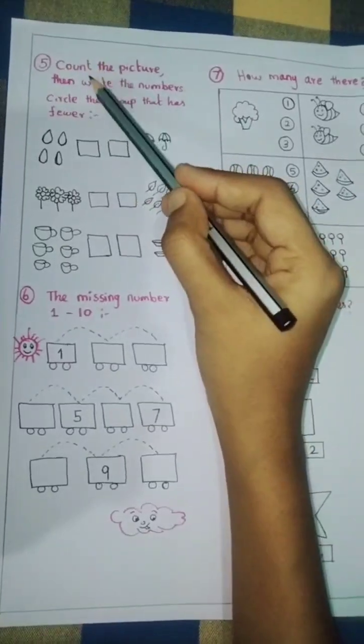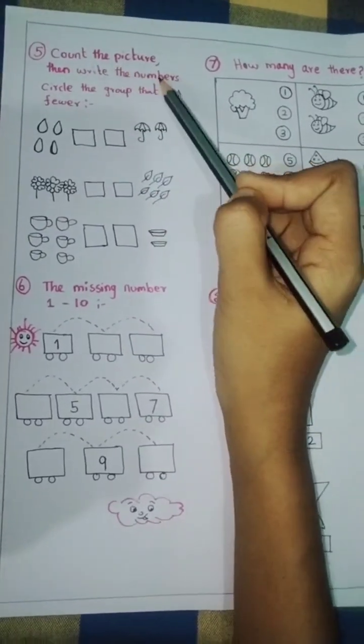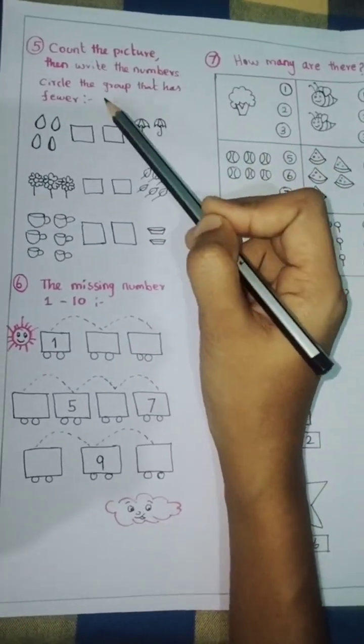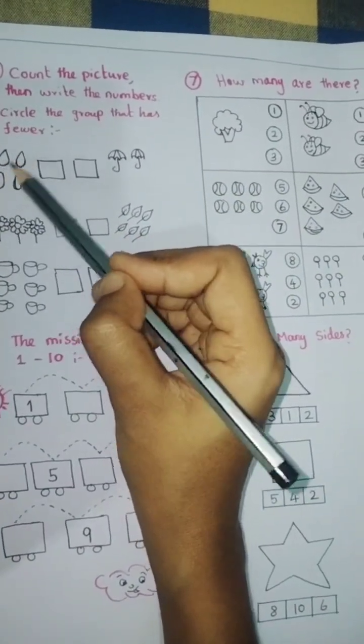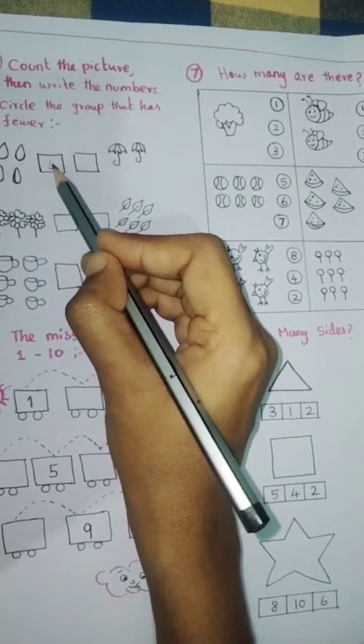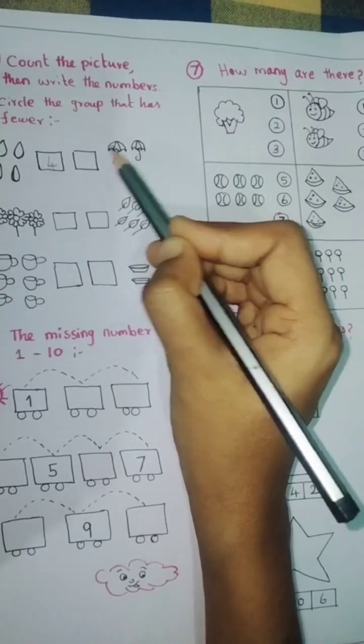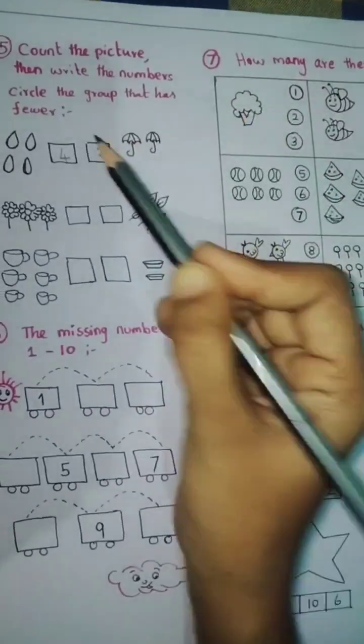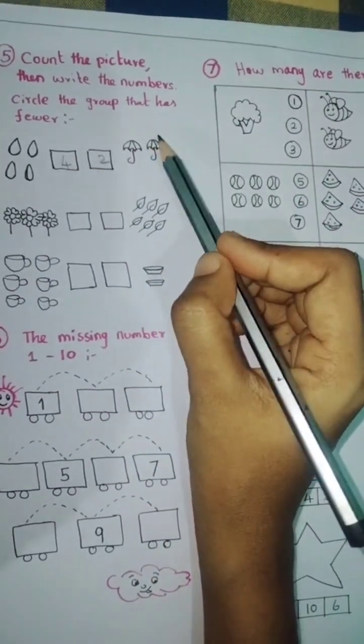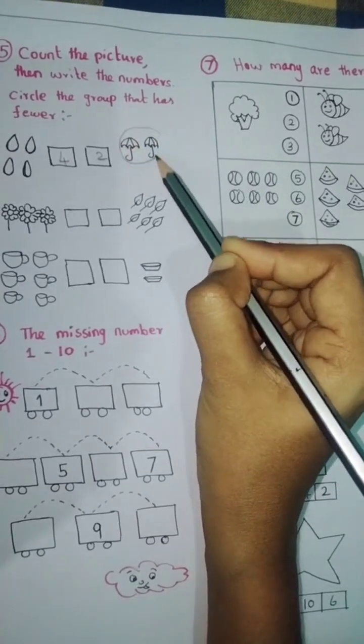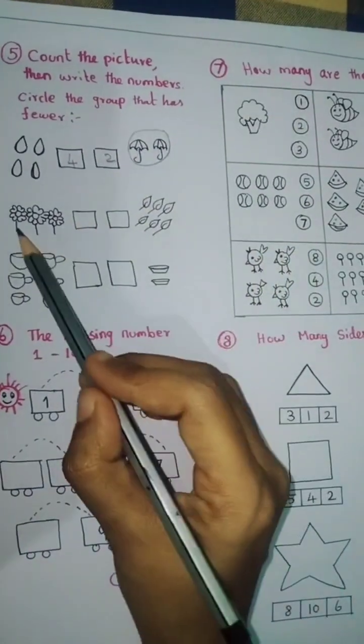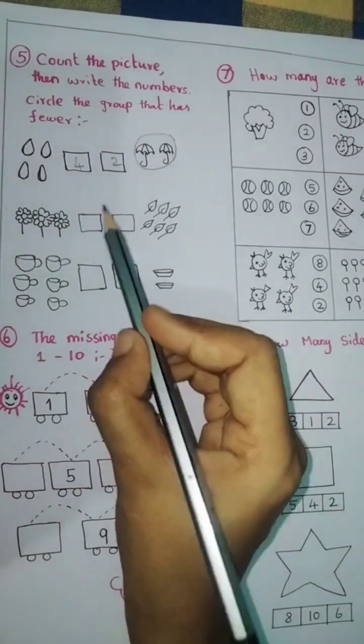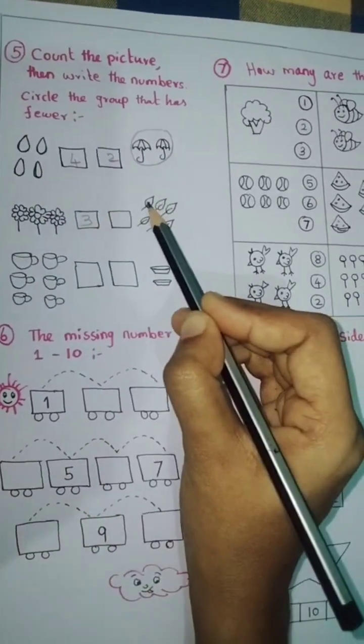Number 5, count the picture then write the number. Circle the group that has fewer. First count 1, 2, 3, 4 dots. Write 4. Next, 1 and 2 umbrellas. Circle fewer groups, umbrella is fewer.